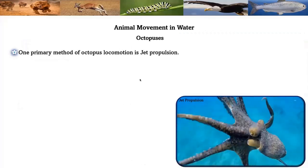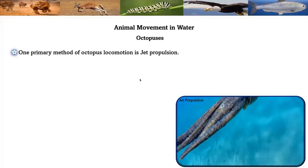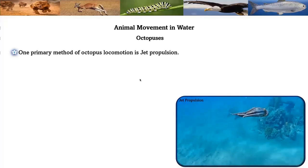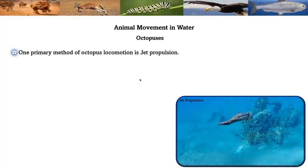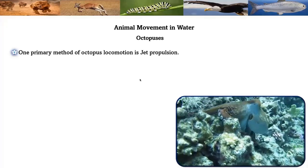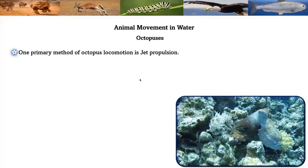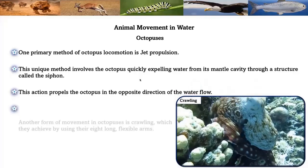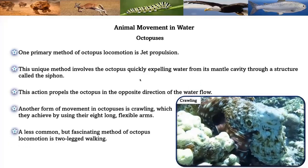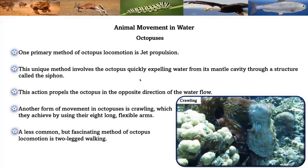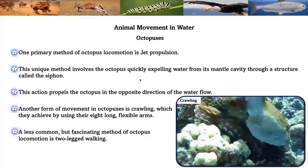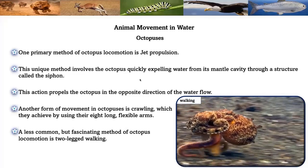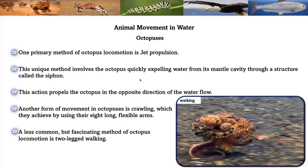Special types of movement in aquatic habitats — octopus: one primary method of octopus locomotion is jet propulsion. This unique method involves the octopus quickly expelling water from its mantle cavity, propelling it in the opposite direction of water flow. Another form of movement in octopuses is crawling, which they achieve using their eight long flexible arms. A less common but fascinating method of octopus locomotion is two-legged walking.